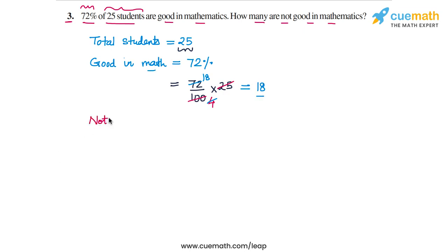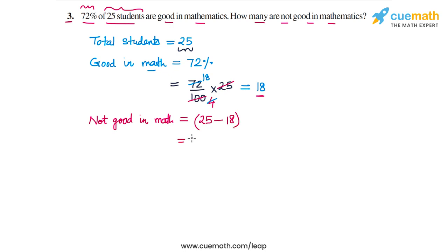The number of students not good in mathematics will be the total number of students (25) minus the number of students who are good in mathematics (18). So 25 minus 18 equals 7. The number of students not good in mathematics is 7.